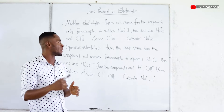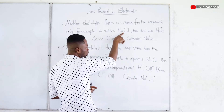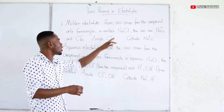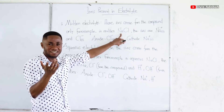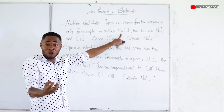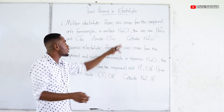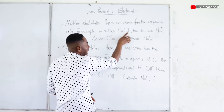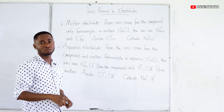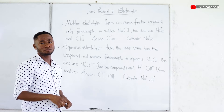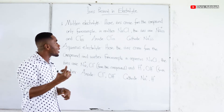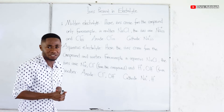Just think about it. When we melt sodium chloride, it is just sodium chloride plus heat. So the liquid we are going to obtain is going to contain only sodium ions and chloride ions. Sodium ions are positively charged. Chloride ions are negatively charged.